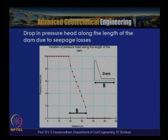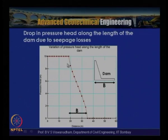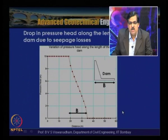This example gives a clear idea of how to construct flow nets for non-homogeneous soils where k1/k2 = 5, with the upper layer having higher permeability. The pressure head distribution along the length of the dam shows how the head drops from upstream to downstream along the equipotential lines as seepage losses occur.